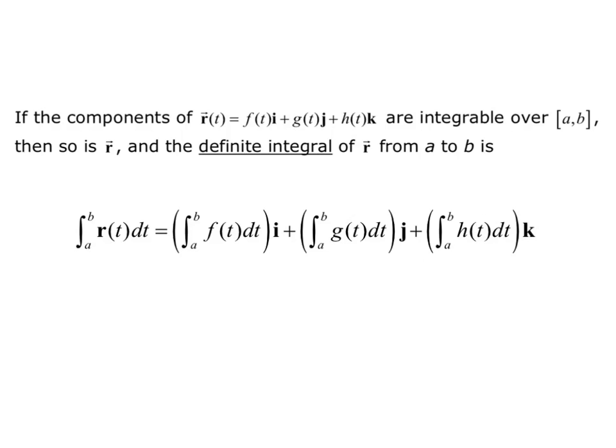The definite integral of r from a to b equals the integral of each component separately. So the integral of f of t dt from a to b gives the i component, plus the integral from a to b of g of t dt times j.